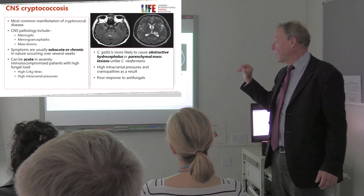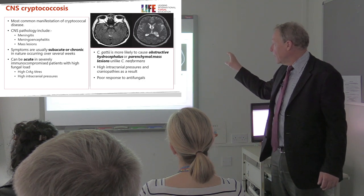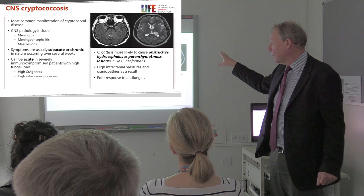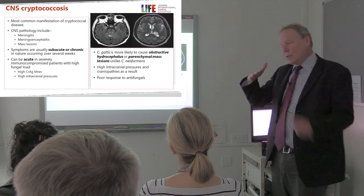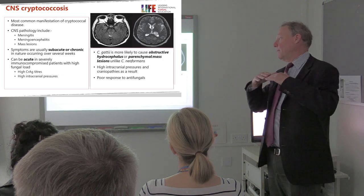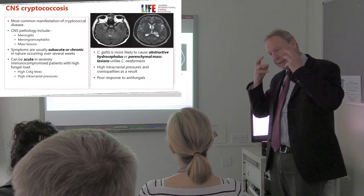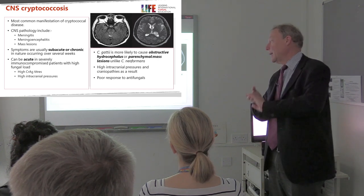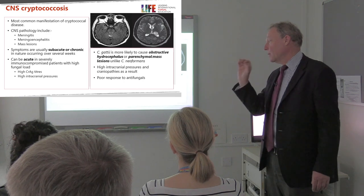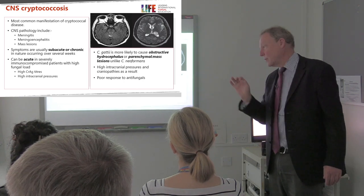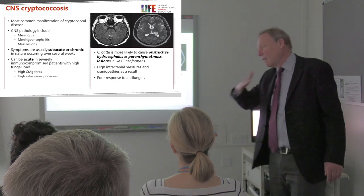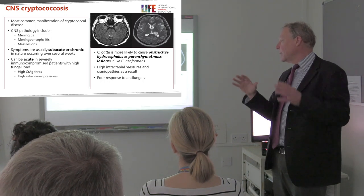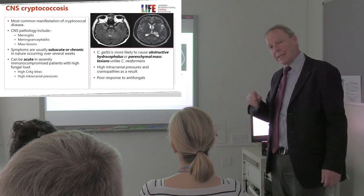Obstructive hydrocephalus is a problem. You can see the parenchymal mass — the cryptococcoma — on this MR scan of the brain. These patients develop high intracranial pressure, becoming slightly confused and developing papilledema. On lumbar puncture you find high intracranial pressures and very high antigen titers, particularly in immunocompromised patients. Some non-immunocompromised patients have low antigen titers but high pressure, which is probably an inflammatory response. Occasionally cranial nerve disorders occur, though they are not very common.